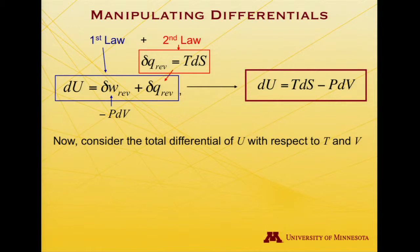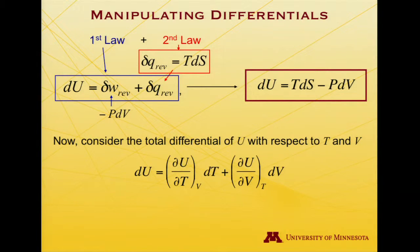But let me consider the total differential of U with respect to T and V. And so if I express U as a function of T and V, I'll get that dU is equal to the partial derivative with respect to T holding V constant times dT plus the partial derivative with respect to V holding T constant times dV.